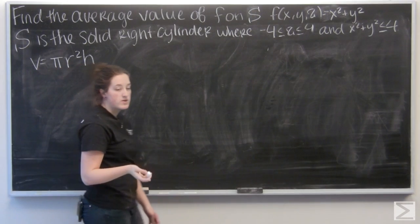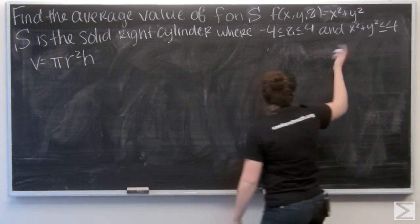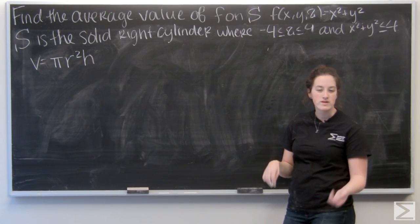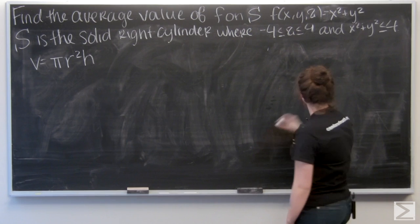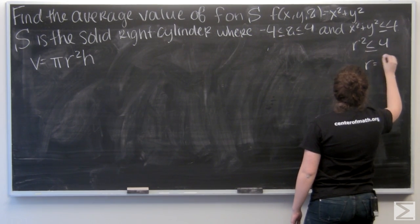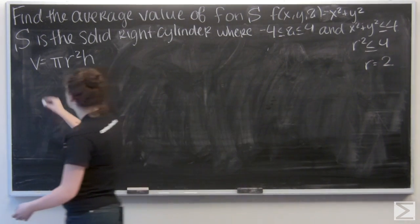So the volume of a cylinder is pi r squared h. I know x squared plus y squared is less than or equal to 4. In cylindrical coordinates, x squared plus y squared is r squared. So here our radius is going to be 2. Let me go and plug that in.